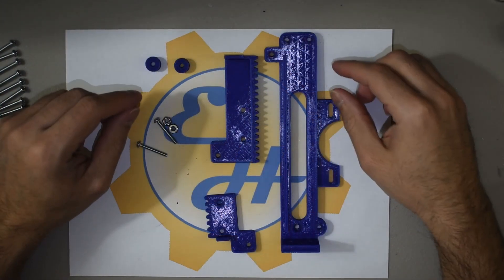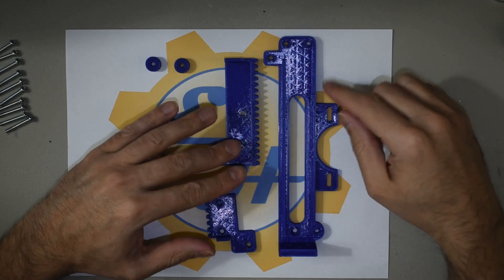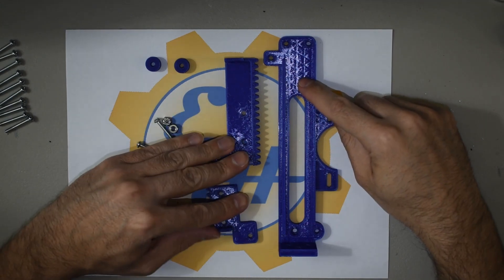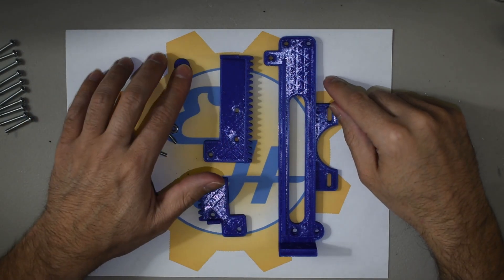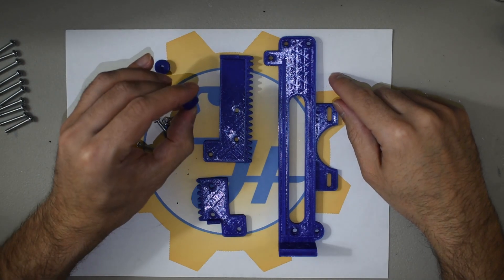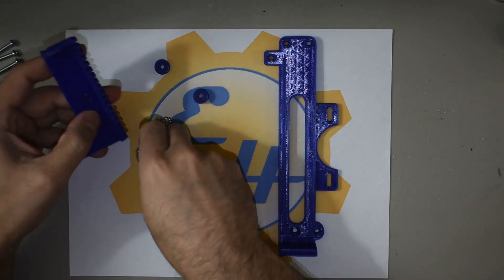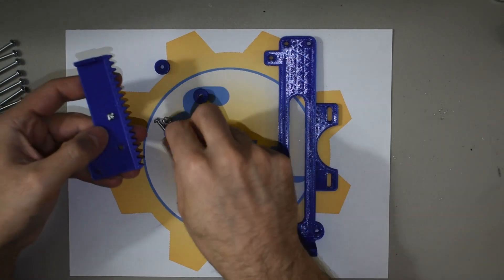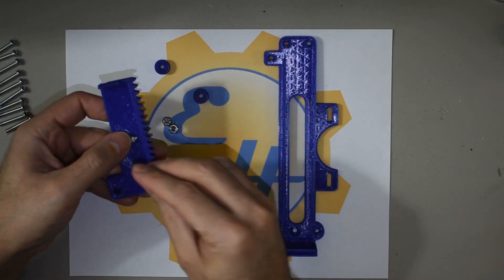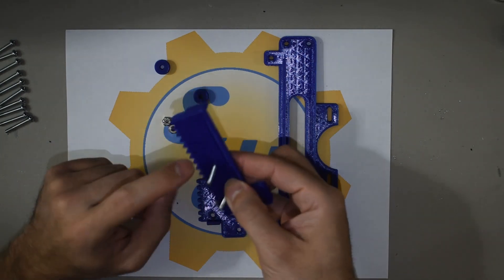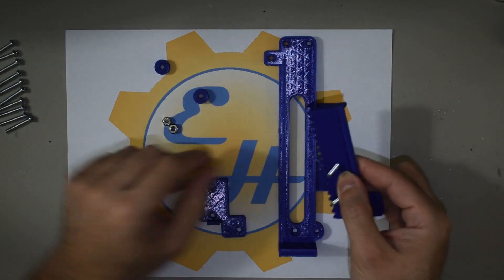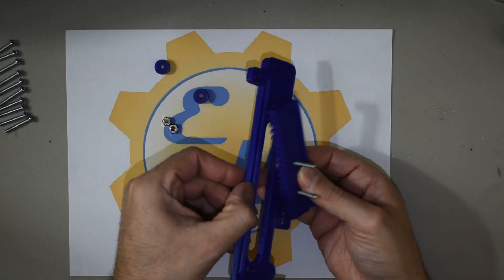Alright, so we're going to start with these main components. This is the bracket and the two sliding gears and these are the two half inch spacers. So you want to start by putting in your screws on this slider on the side that doesn't have the groove because that groove is going to go against this rail.